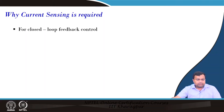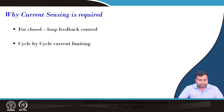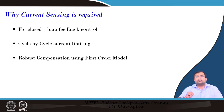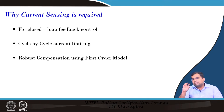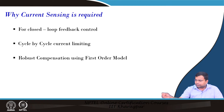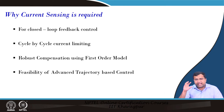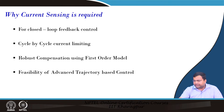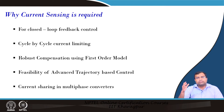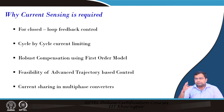Current sensing is required for closed loop feedback control and cycle-by-cycle current limit, which we know about from current mode control. We also have robust compensation — if we use current mode control, the inductor will virtually become a controlled current source, making compensation design easy. We can also implement advanced non-linear control like trajectory-based and charge-based control, and current sharing for multiphase converters.